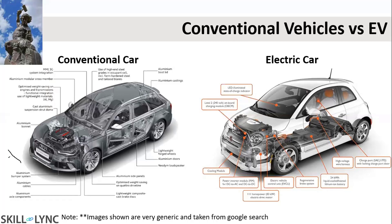These are the main differences to understand at first instance — why the development process of a conventional car is different from the manufacturing process of an electric car. Electric cars use more smart technology, and we have to do a lot of small technology applications inside the electric vehicle. For that reason, there is a different set of development processes in an electric car.